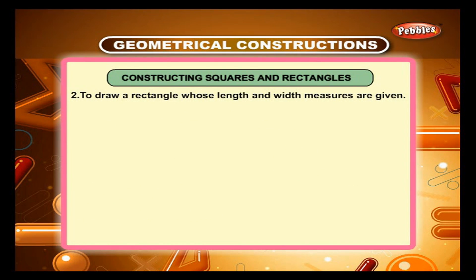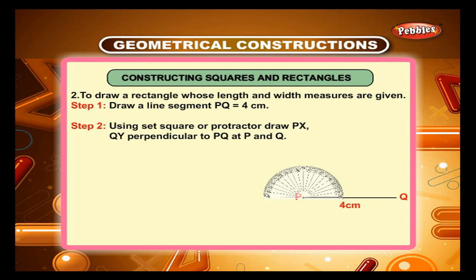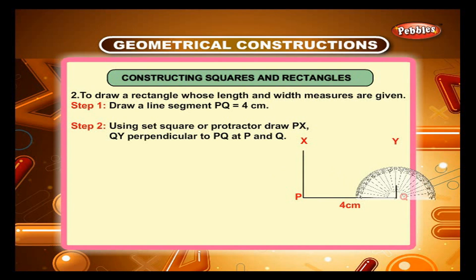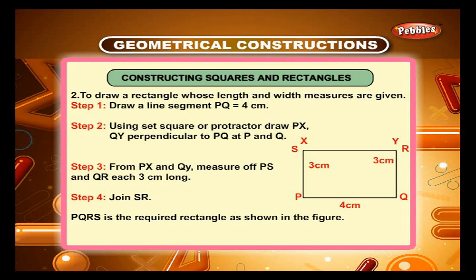Sum 2: To draw a rectangle whose length and width measures are given. Step 1: Draw a line segment PQ equal to 4 cm. Step 2: Using a set square or protractor, draw PX and QY perpendicular to PQ at P and Q. Step 3: From PX and QY, measure PS and QR each 3 cm long. Step 4: Join SR. PQRS is the required rectangle as shown in the figure.